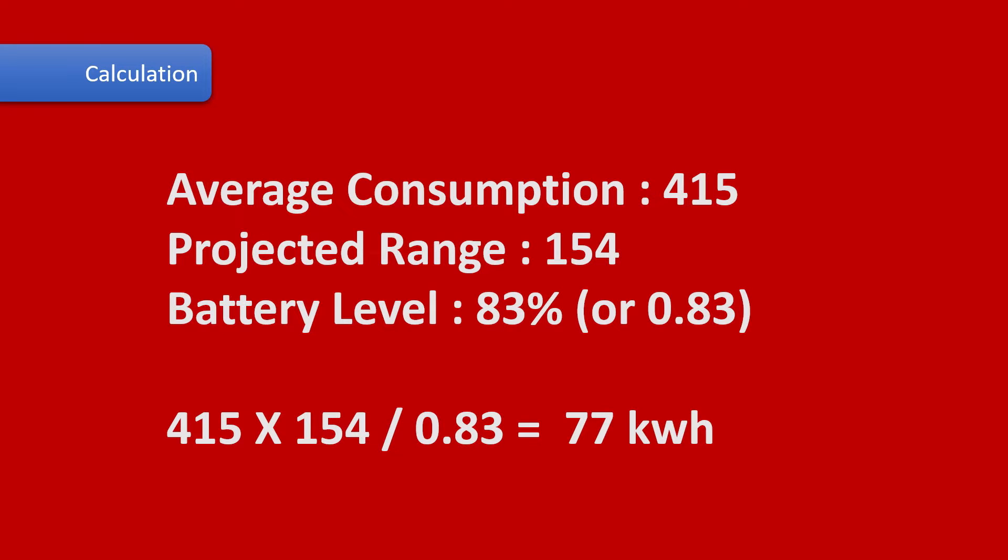For our Model Y, we can see an average consumption of 415 watts per mile and a projected range of 154 miles. Multiplying those two together tells you how many kilowatt-hours are currently in the battery. Dividing that by the battery level as a percentage shows the usable capacity is currently about 77 kilowatt-hours.